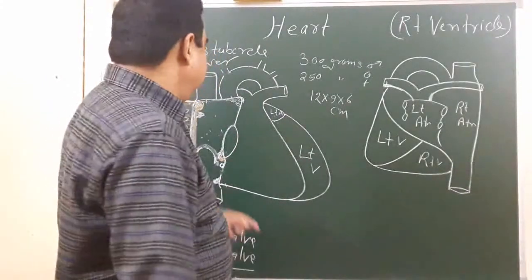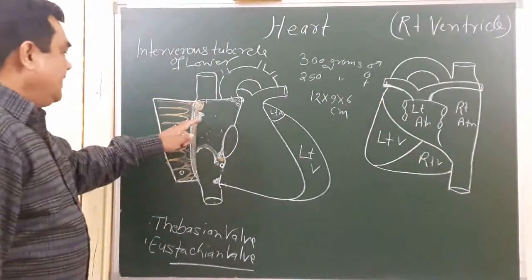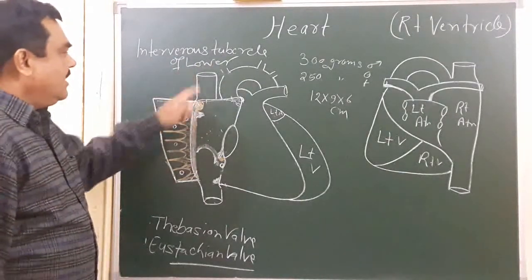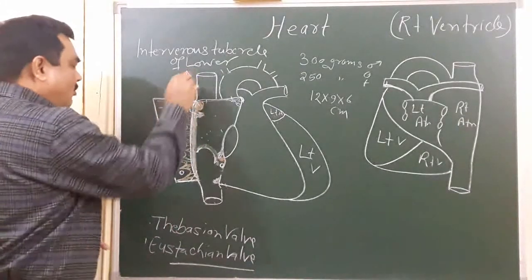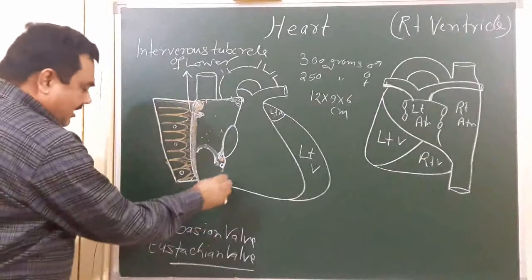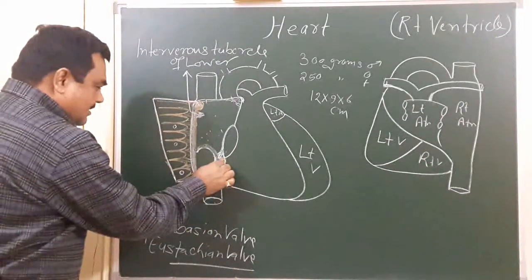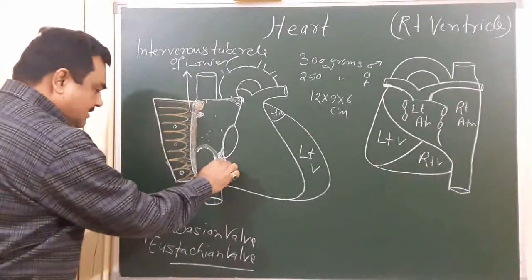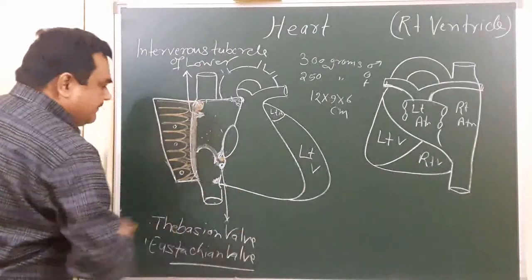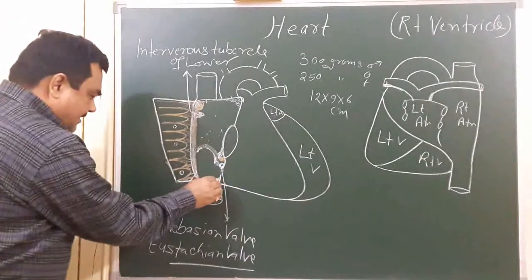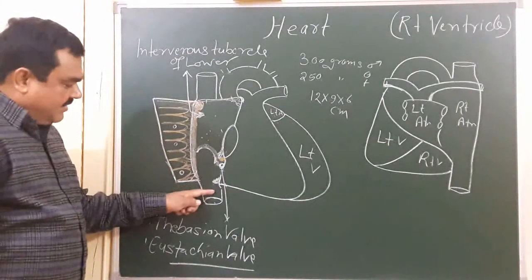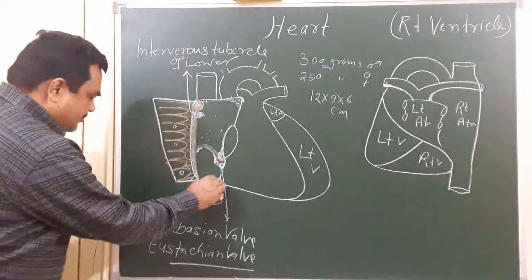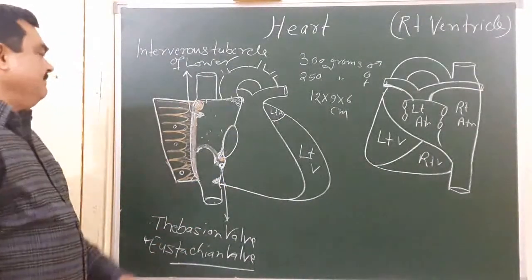In previous lectures we saw some named valves and tubercles. Here is the intervenous tubercle of Lower. Here is the Thebesian valve — the opening of the coronary sinus is guarded by a valve known as the Thebesian valve. And the inferior vena cava opening is guarded by a valve known as the Eustachian valve.